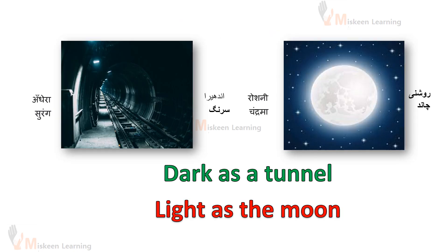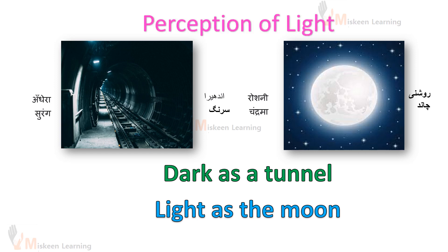Dark as a tunnel — eek suram ki tira, andhera. Light as the moon — chand ki tira, roshan. Yahaan per hum kis cheese ka comparison kar raha hai? Ki roshni — hame kis tarah se nazer a raha hai? Kabhi andheri, ya kabhi roshan — we are comparing light, whether something appears dark or bright.